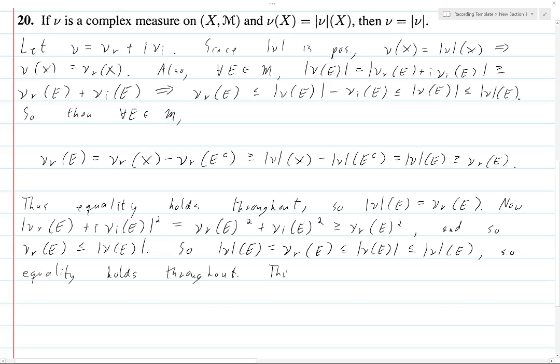But this is just ν_r of e plus i ν_i of e. But then this implies that ν_i of e must be equal to zero. Because otherwise, it would affect this value. And it wouldn't hold that it could be equal to ν_r of e. So, anyways, this is zero.